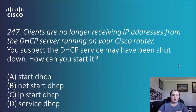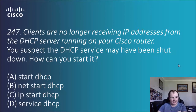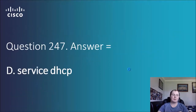Question 247: clients are no longer receiving IP addresses from the DHCP server running on your Cisco router. You suspect the DHCP service may have been shut down — how can you start it? The options are: start DHCP, net start DHCP, IP start DHCP, and service DHCP. It is simply a command and the answer is 'service DHCP'.